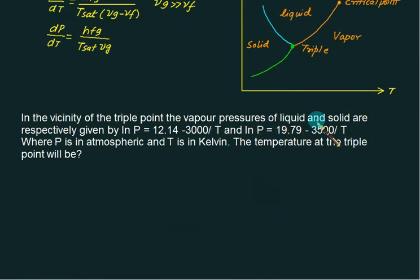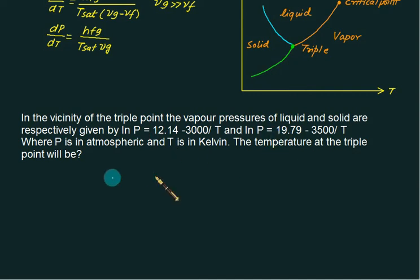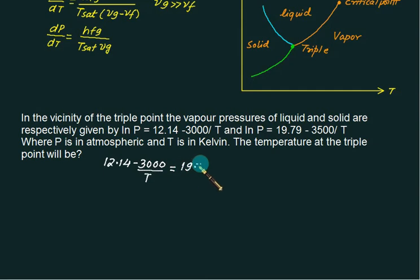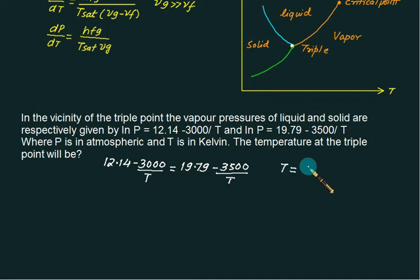Near the triple point, the vapor pressure equations for liquid and solid are given as: ln(p) = 12.14 − 3000/T and ln(p) = 19.79 − 3500/T respectively. To find the triple point, we equate both equations: 12.14 − 3000/T = 19.79 − 3500/T. Solving this equation gives the triple point temperature very close to 65.61 Kelvin.